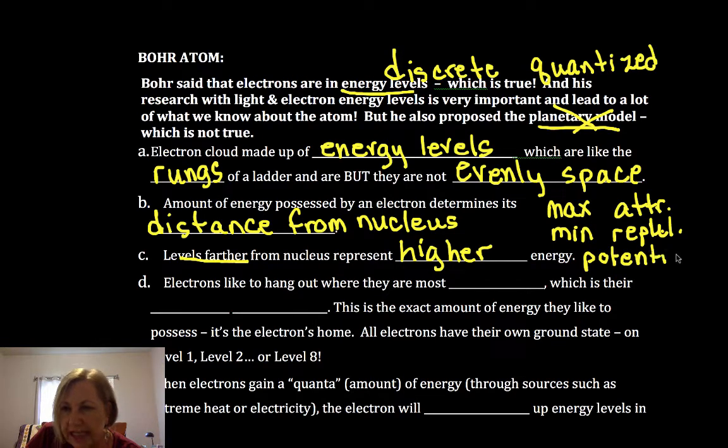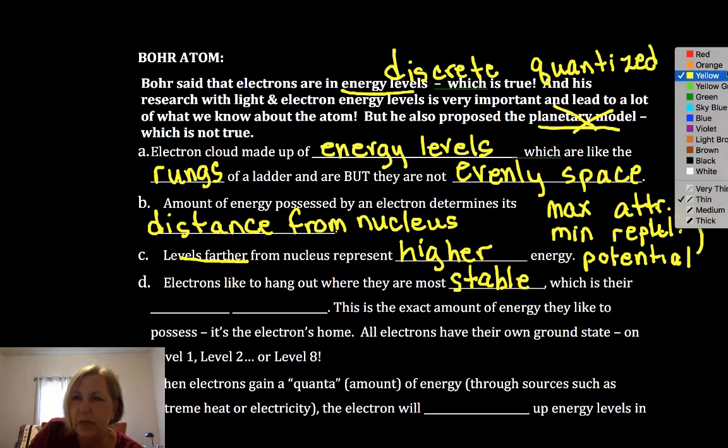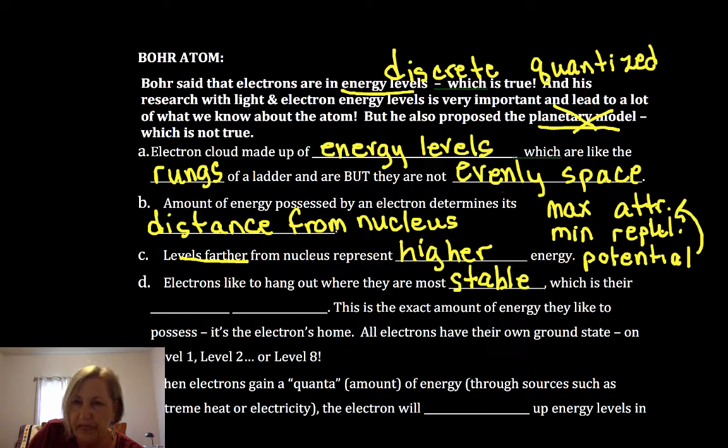Potential energy in chemistry is all about those attractive and repulsive forces. So electrons like to hang out where they are most stable. That most stable state is where these attractions have been maximized and repulsions have been minimized. And this is called the ground state.